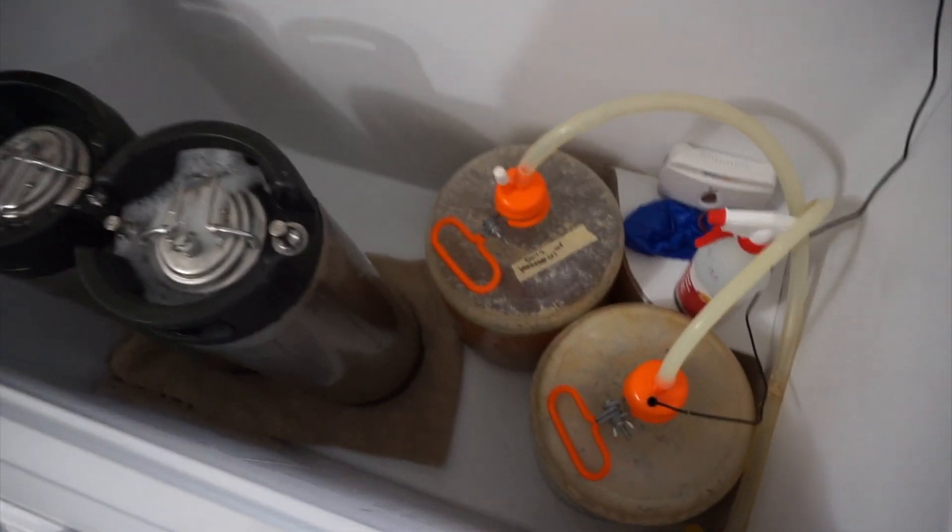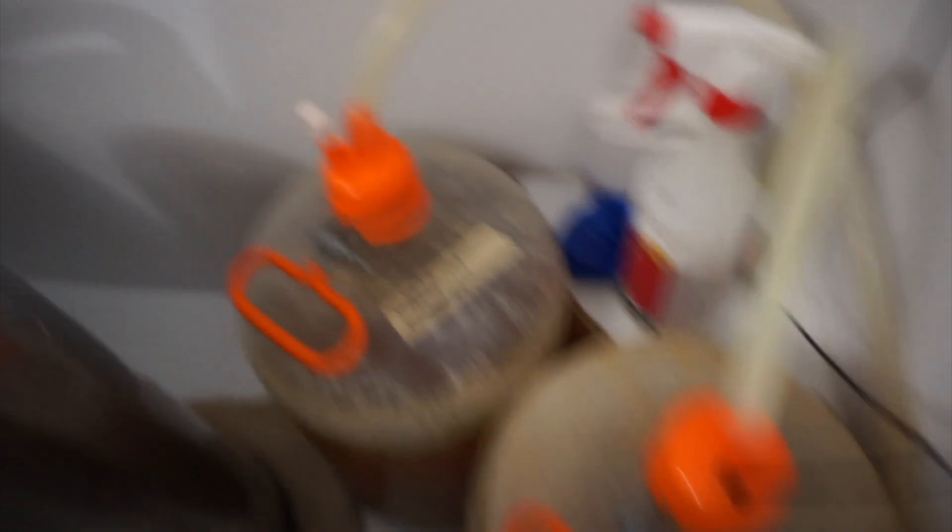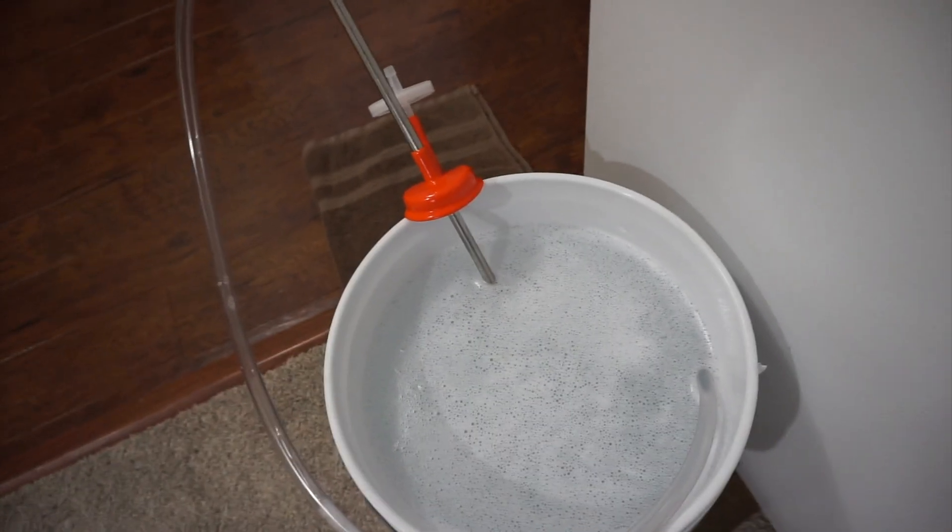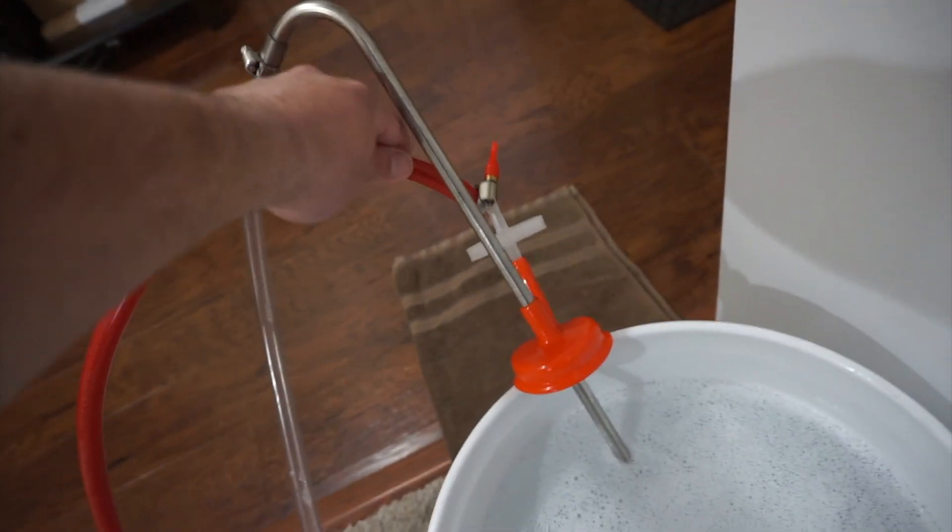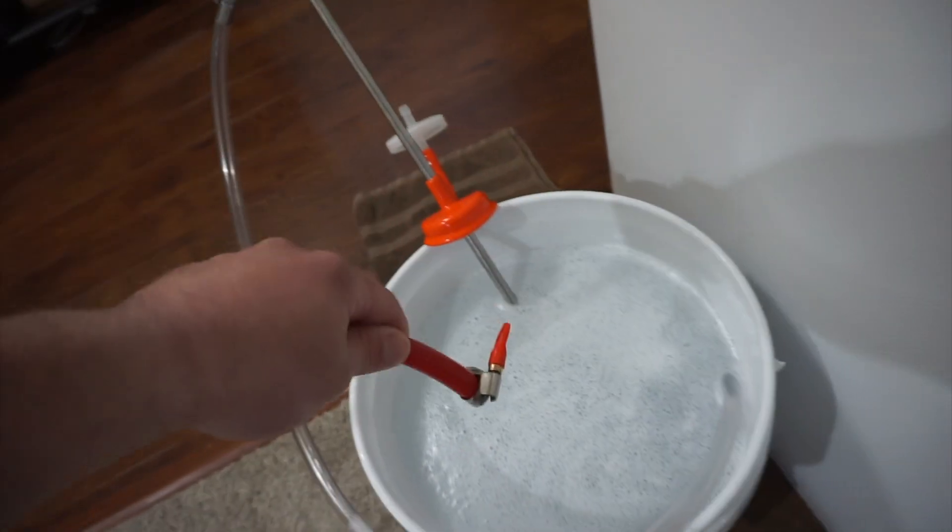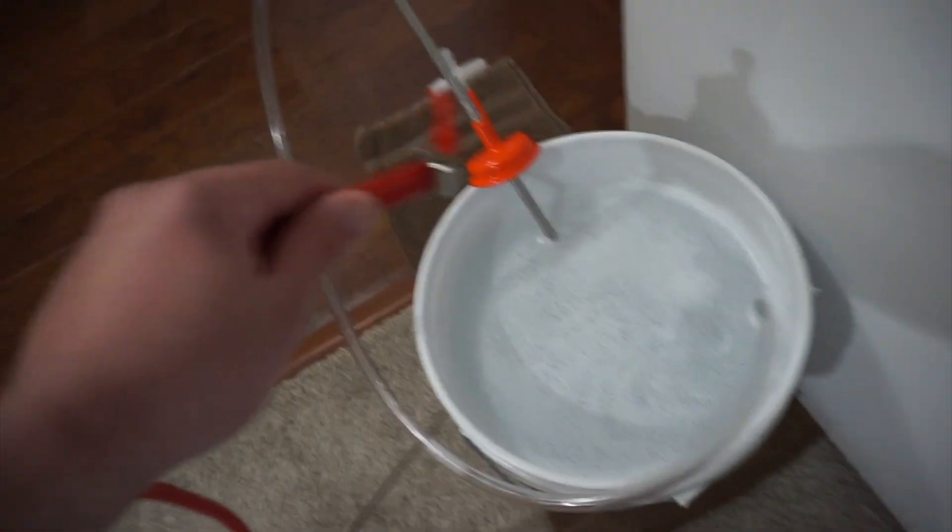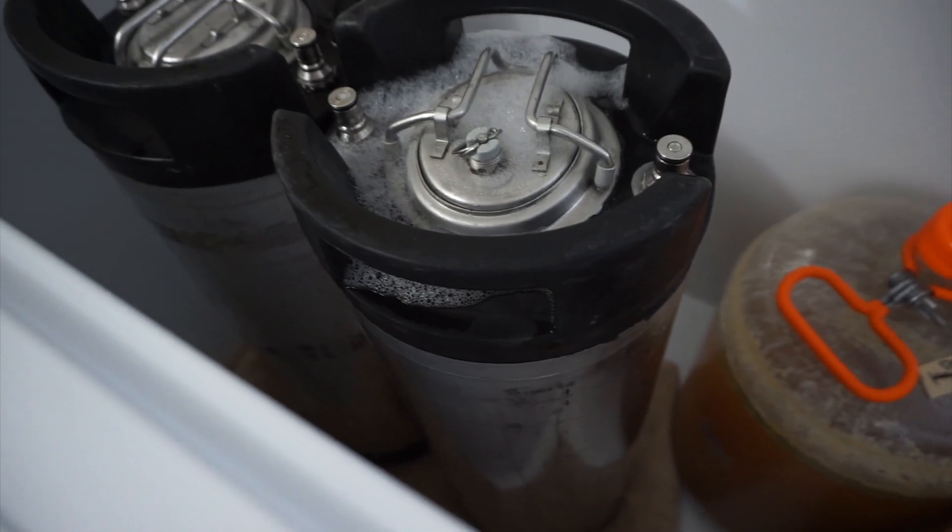All right, so we're ready to rack the beer into our kegs. Get your spray bottle full of Star San, isopropyl alcohol, or whatever sanitizer you use. We're going to pop this lid off, replace it with the new one and racking arm. Then we're going to put this end from the CO2 tank into the sanitary filter that's going to push CO2 into the carboy and pressure will then push the beer out of the racking arm.